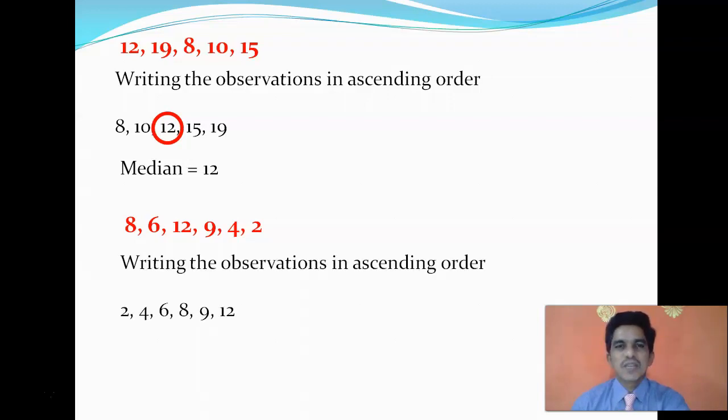In this second case also, you have to write the values in ascending order: 2, 4, 6, 8, 9, 12. If you observe this case, there are actually two values in the middle of the data: 6 and 8. The data has an even number of observations with two middle values. In the previous case, there were an odd number of observations.